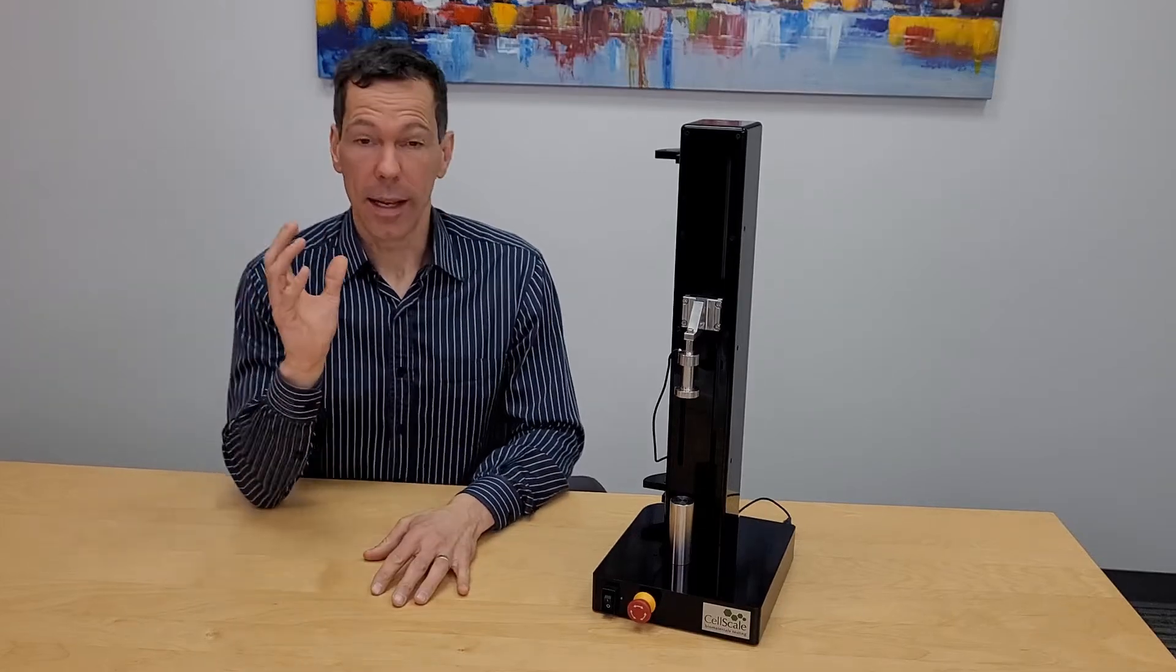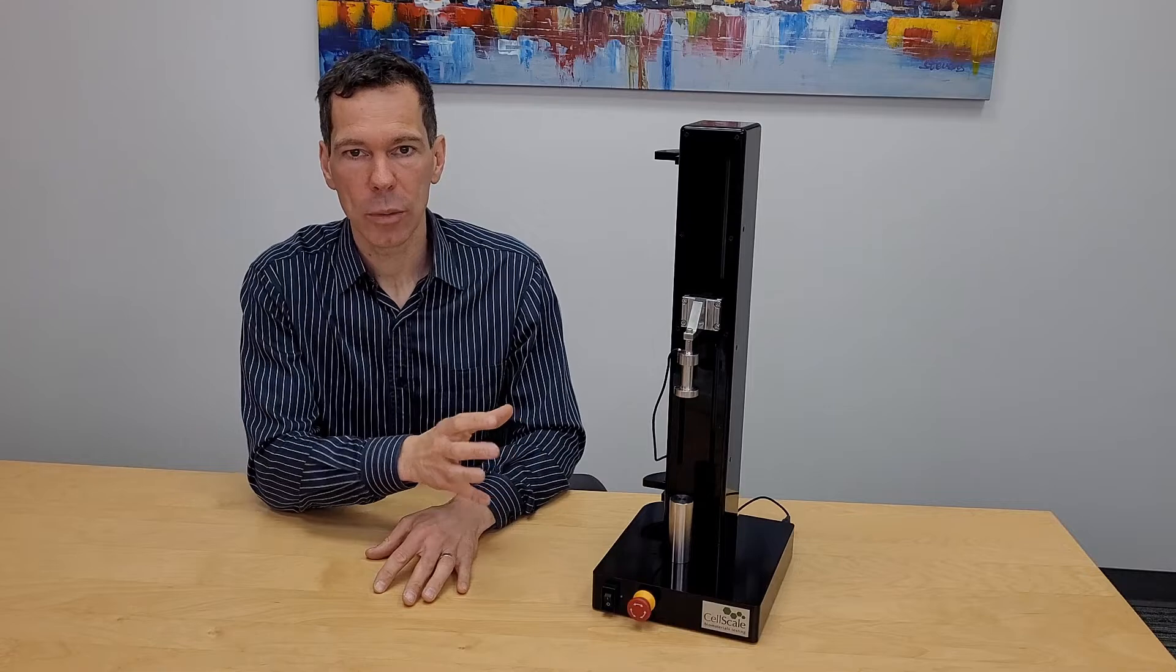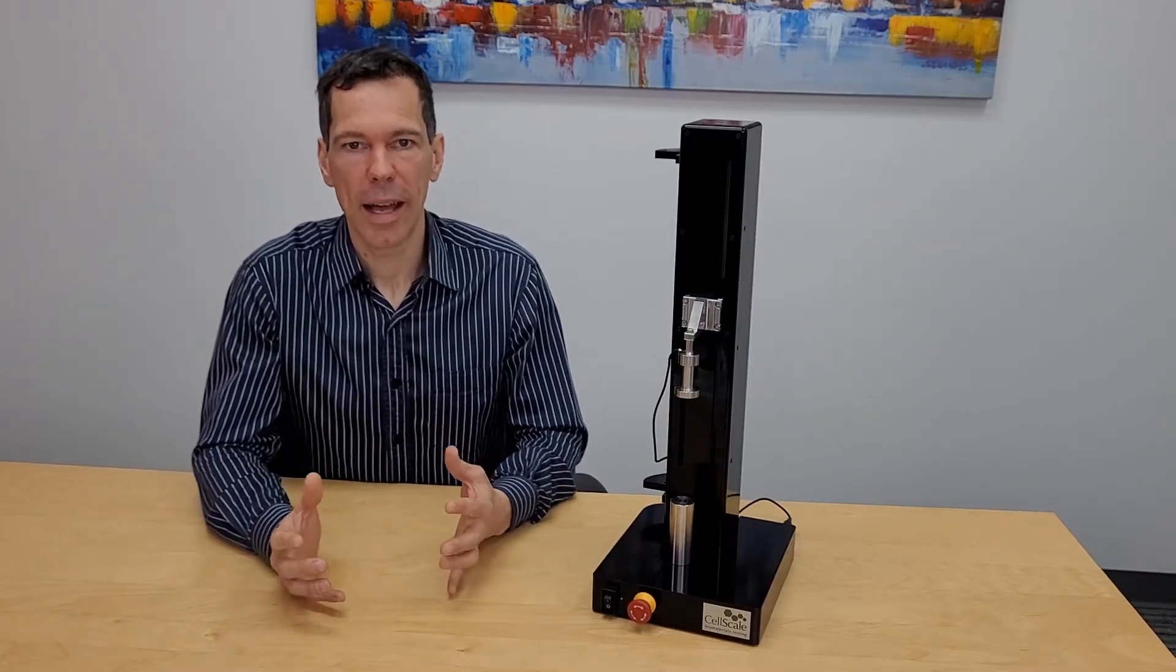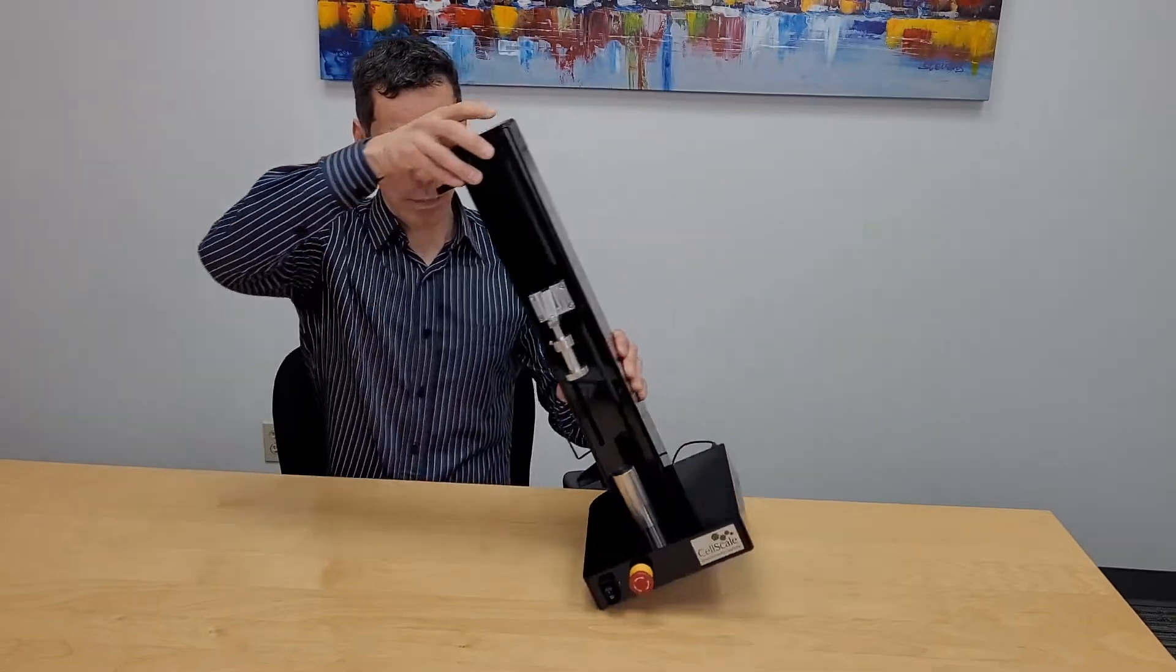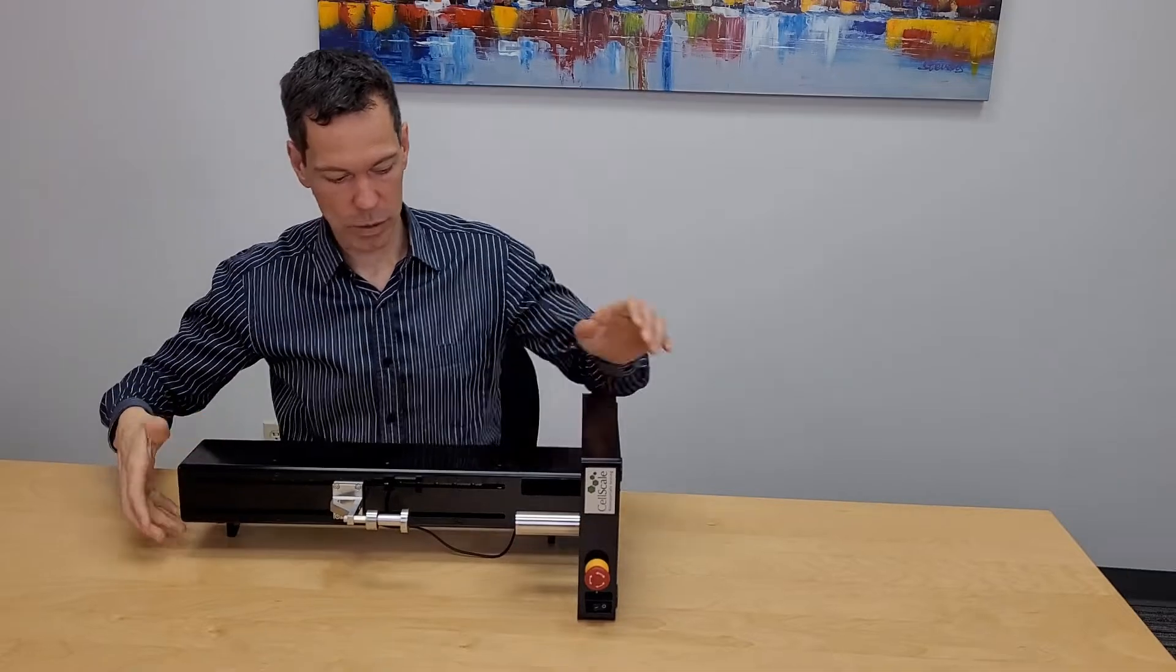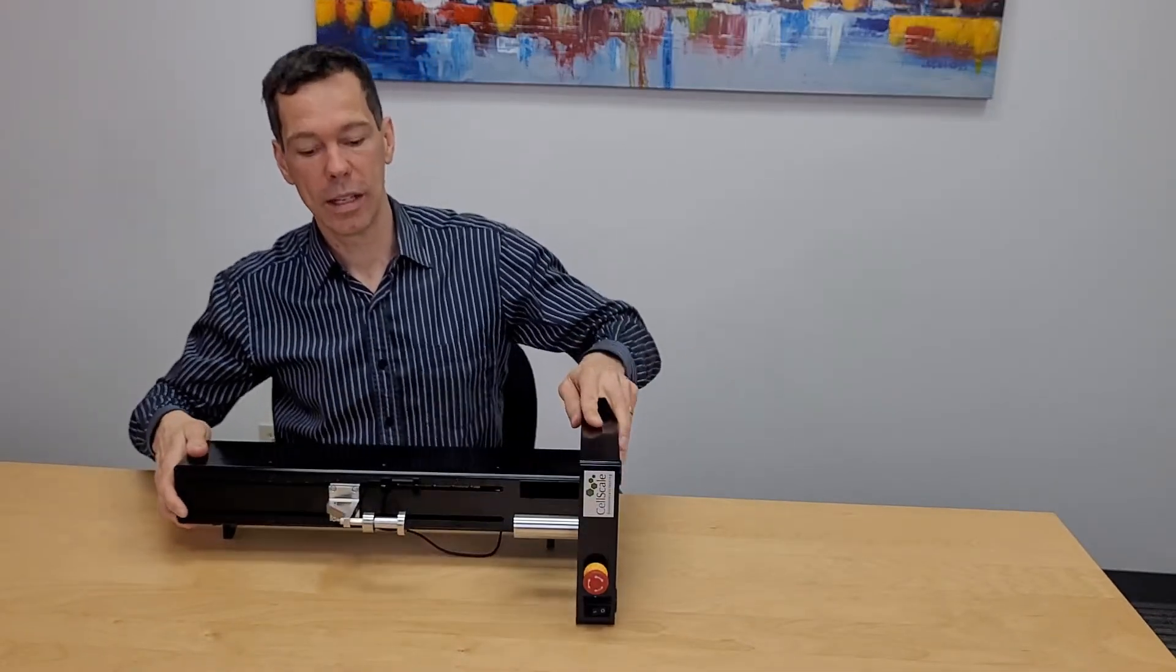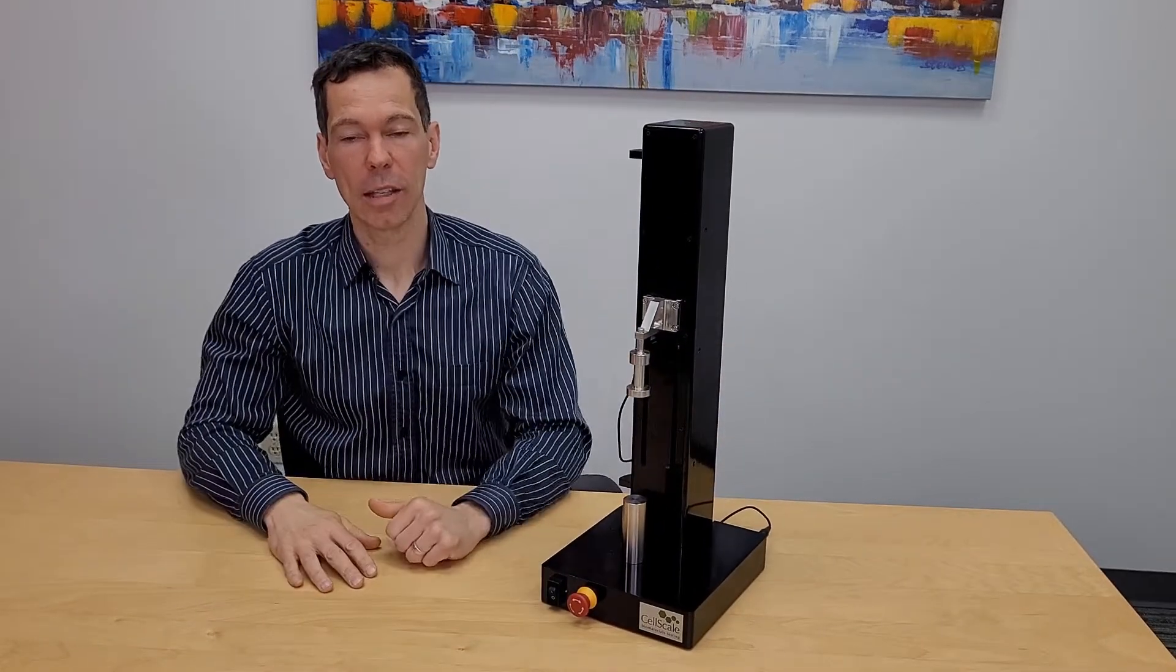You can add on the camera package that allows you to do DIC strain measurements. You can have a vertical or a horizontal temperature controlled media bath. You can run the system vertically or you can actually pivot the system so you're running it horizontally and being able to raise and lower your specimen quite easily out of a media bath. It really is a workhorse, a small but mighty system.